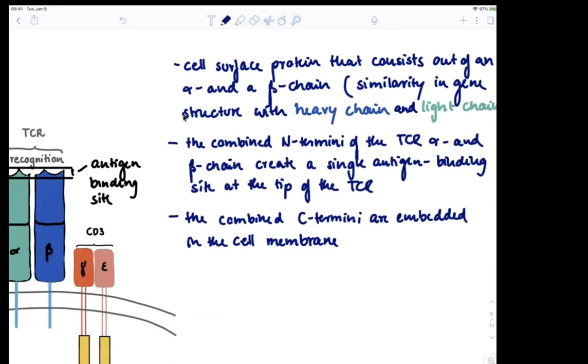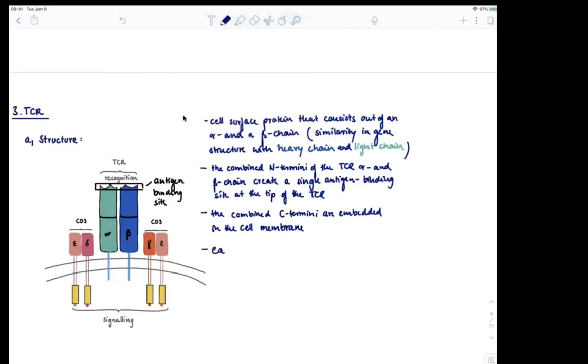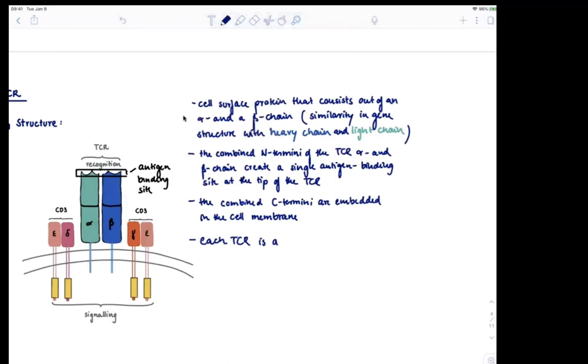This signaling complex for the T-cell has its own name. There is a signaling complex called CD3. Each TCR is accompanied by a protein complex called CD3, and signaling occurs via CD3.